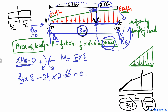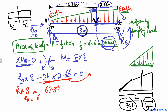Dividing 63.84 by 8, we find the support reaction RA, which comes out to be 7.98 kilonewton.